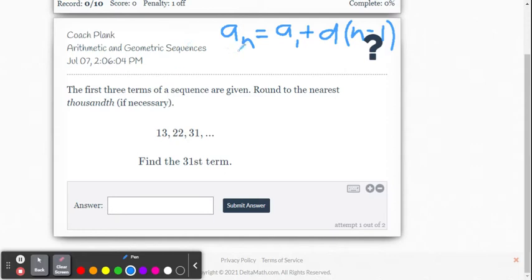Our formula is a_n equals a_1 plus d times (n minus 1), where n is the term number. So in this case, n is 31.